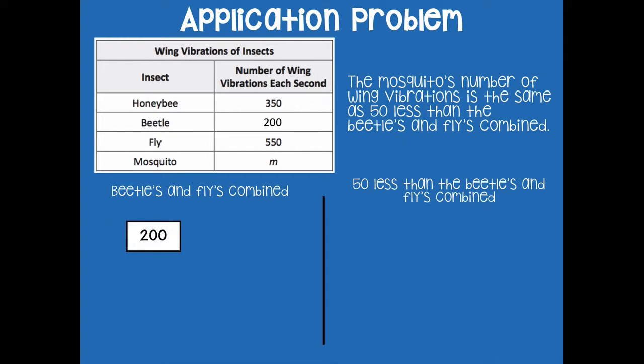I have 200 for the beetle and 550 for the fly. If I combine those, I'll represent it as V for the missing vibrations we don't know yet. So 200 plus 550 — go ahead and solve that on your dry erase board and click play when you're ready to go over it together.